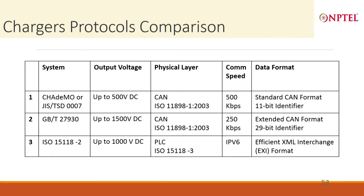Overall, if we look at the standards, we talked about their voltage differences, we talked about their CAN physical layer. The speed in GB/T is 250 kbps, in CHAdeMO 500 kbps, and ISO actually works on IPv6, so it is the most advanced version.